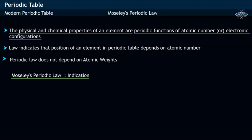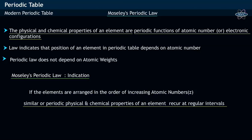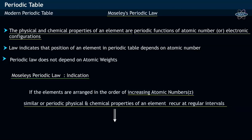Moseley's periodic law indicates that if the elements are arranged in the order of increasing atomic numbers, then similar properties recur or are repeated at regular intervals. Moseley termed this repetition of properties with increase in atomic number as periodicity.